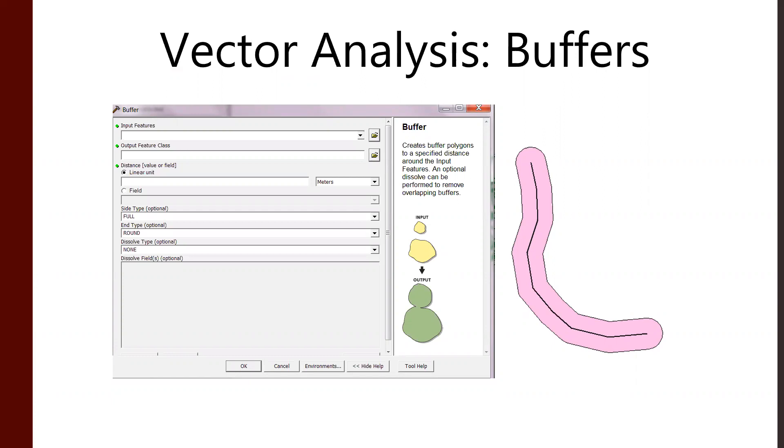In any case, tools work the same. So we're just going to look at these old screenshots. Plus who doesn't love the look of Windows XP, right? Cool. Anyway, in vector, we have buffers. Buffers create a polygon at a specified distance around the input feature. And you can play with the settings to dissolve it, to have certain finishing types, so on and so on. Vector buffer.